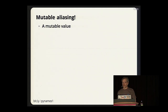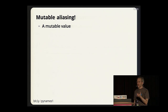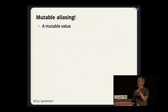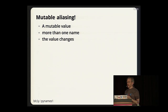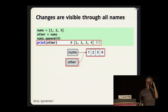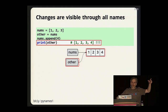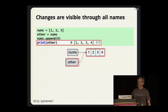This is what's known as mutable aliasing, and it happens when you have a mutable value. Lists have methods that let you change the value in place. When we used `.append()` on the list, we didn't make a brand new list—we had one list object which changed its value. We had more than one name, the value changed, and all the names see the change. In a larger program, the two or three or four names can be widely spread apart, so the surprise can be much more long-distance than I can show on this slide.